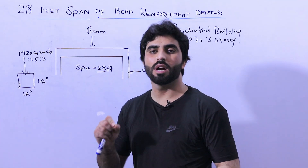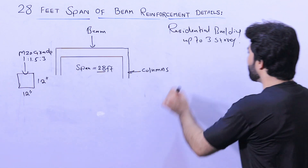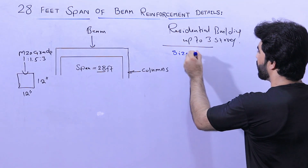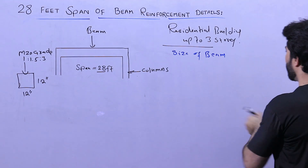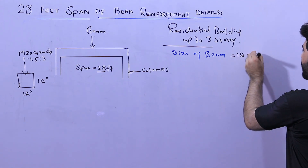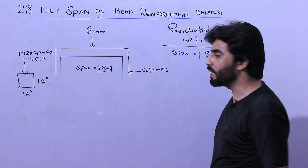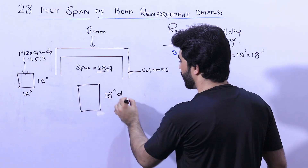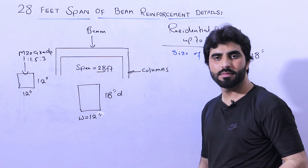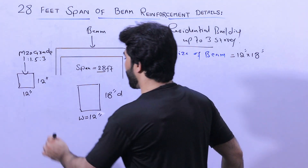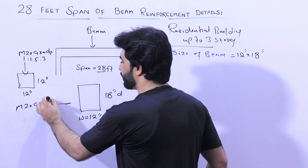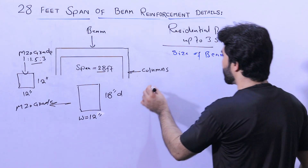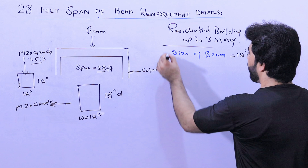For a 28-feet span, up to three storeys for a residential building, the size of beam is 12 by 18 inches — width is 12 inches and depth is 18 inches. We already use M20 grade concrete with that ratio. So the size is 12 by 18 inches.